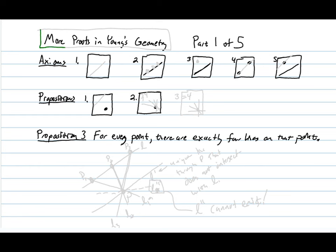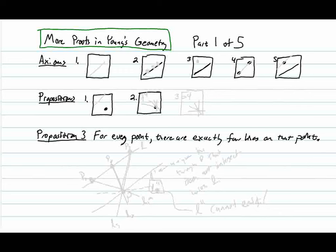Good evening, everybody. We are back to continue our series on proofs in Young's Geometry. We're going to continue on the line of the previous two proofs, but first let's quickly review what the axioms were for this geometry.